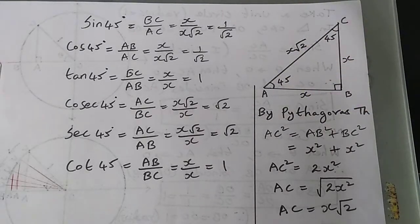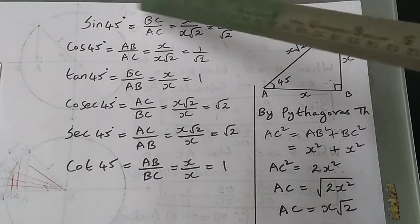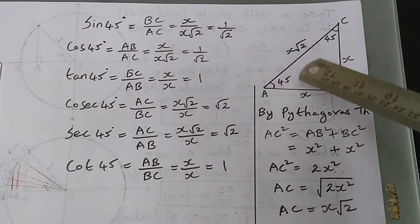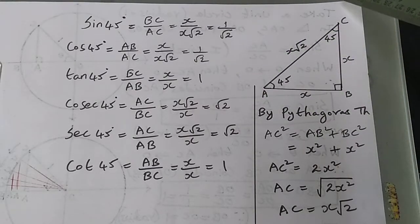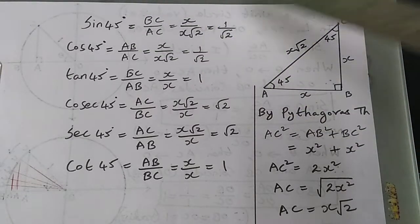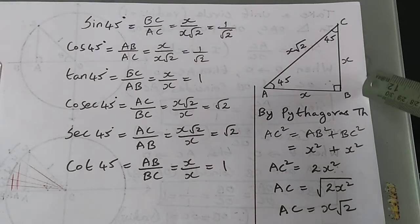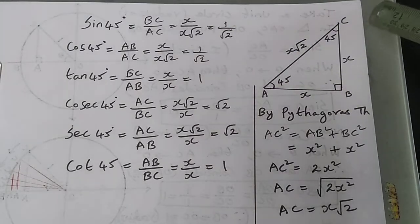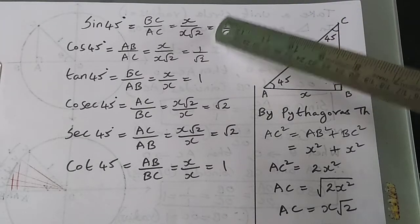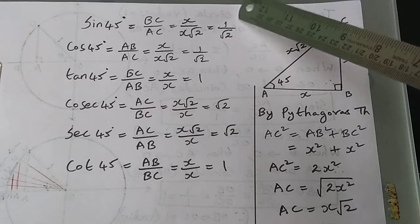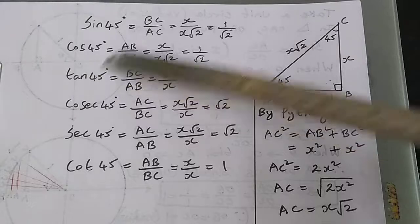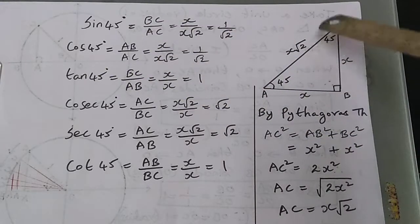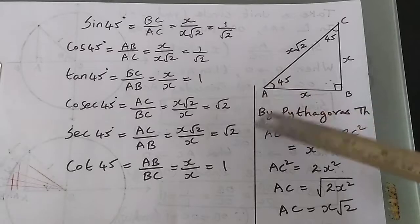Now, sine 45 is opposite by hypotenuse, so sin 45 = BC/AC. BC is X and AC is X√2, so X divided by X√2 — the X's cancel — giving 1/√2. Now cos 45 is adjacent by hypotenuse, so X by X√2.